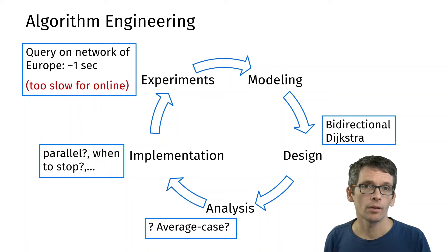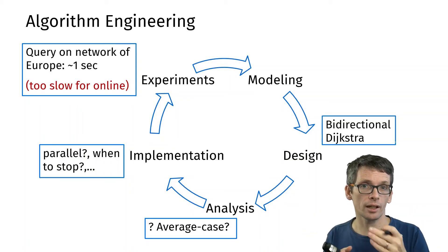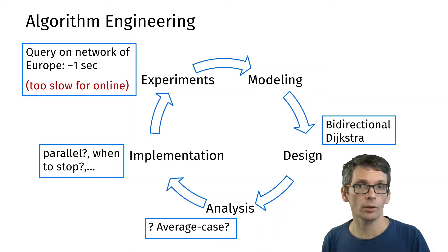Then we could be doing experiments again and we would see that yes it's faster but not fast enough. A query on the network of Europe would now take around a second which doesn't sound too bad, but if you think of an online setting with many users and each of those takes a second of computation time, that would be too much for the system. So that is too slow.